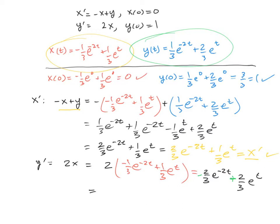And now if we look at our y and take the derivative, that is going to be a negative 2/3 e^(-2t). And then plus the 2/3 e^t. And yes, that is y prime. So we have 2 times x equaling y prime. So we've shown now that both solutions, x(t) and y(t), satisfy the system of differential equations. So, again, just be very careful because you'll notice that one negative sign can throw everything off.